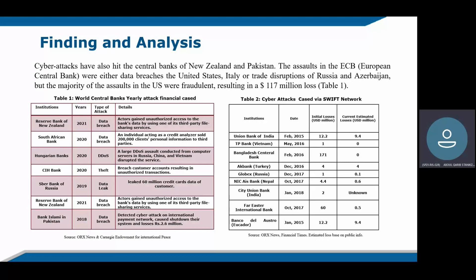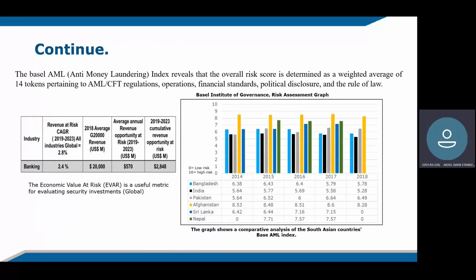There are also cyber attacks caused through the SWIFT network. Cyber attacks utilizing SWIFT may be used for fraudulent purposes. Cyber criminals can get access to personal information such as a client's online payment details. Cyber-related fraud accounted for 19% of reported losses, as described in Table 1. We also present a risk assessment based on email and money laundering data for some South Asian countries. The graph shows a comparative analysis of South Asian countries based on the AML index, with information provided by the Basel Institute on Governance.